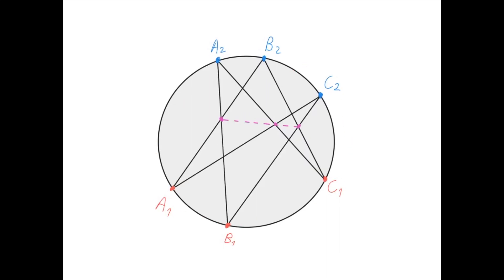This is an illustration of Pascal's theorem. Suppose you have six points on the circle, labeled A1, B1, C1, A2, B2, and C2 in any order. Then connect each point with the two points that share nothing in common with its name. For example, A1 connects to B2 and C2; B1 connects to C2 and A2; C1 connects to B2 and A2. You then get three intersection points: the intersection of lines containing A and B, lines containing A and C, and lines containing B and C.